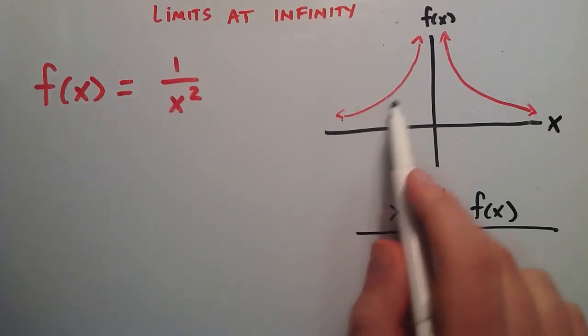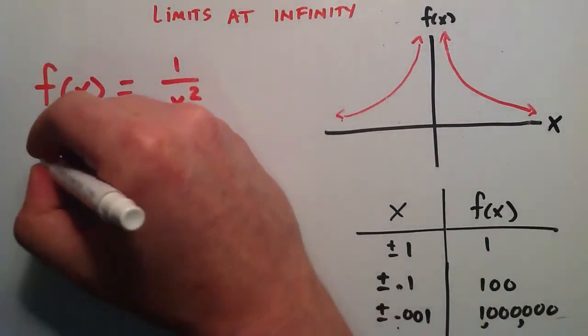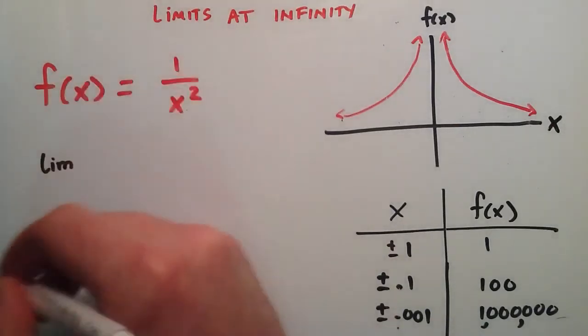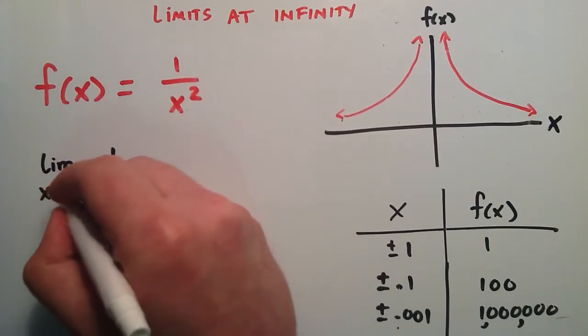I went ahead and graphed it here in red, and wrote some corresponding x and f(x) values. We're going to be looking at the function 1/x². We're going to be taking the limit of this function as x approaches 0.